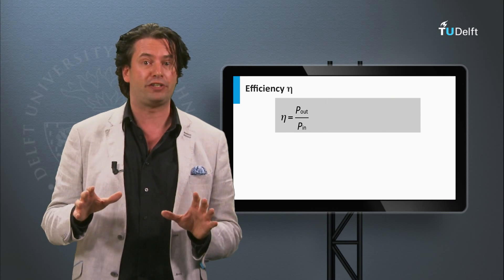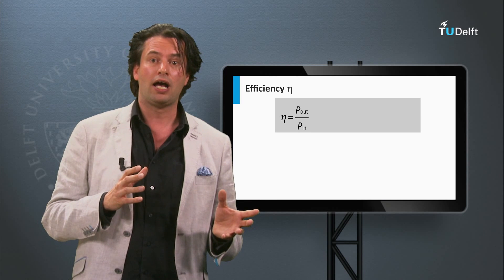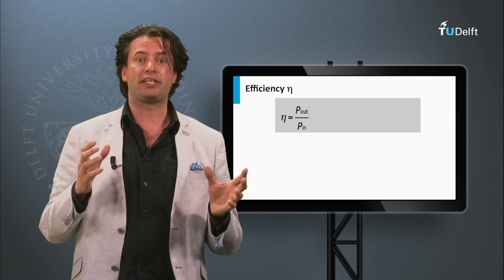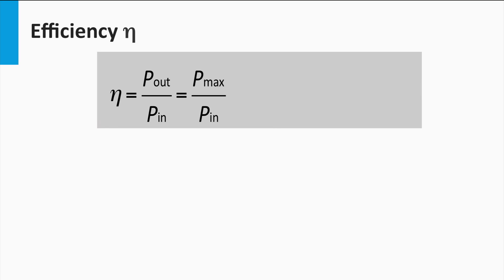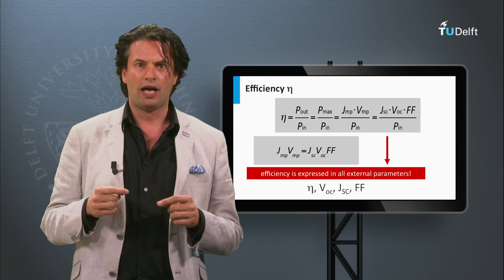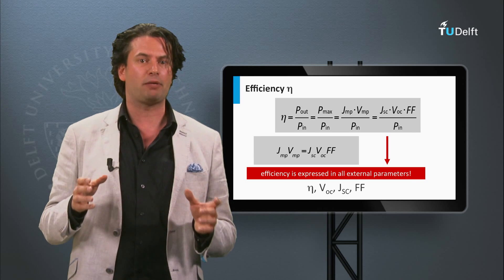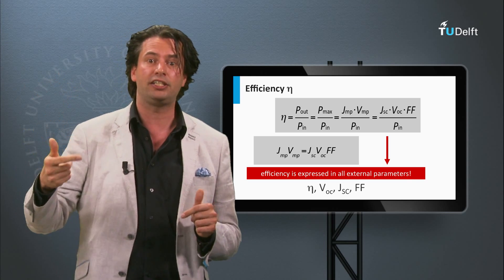Now we introduce the conversion efficiency eta of a solar cell. This is the ratio between the power density output Pout and the incident light power density Pin. The conversion efficiency is defined at the maximum power point, so Pout equals Pmax, which equals Jmp times Vmp. This product equals the product of the short circuit current density, the open circuit voltage, and the fill factor. As a result, the conversion efficiency can be expressed using the three external parameters: open circuit voltage, short circuit current density, and fill factor.